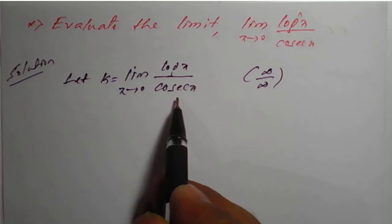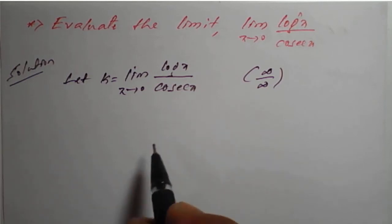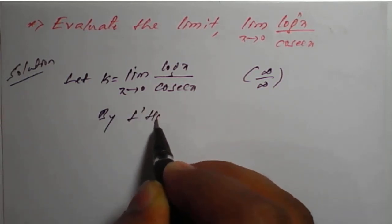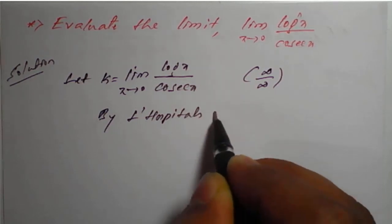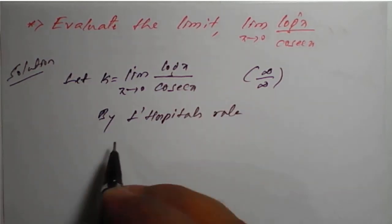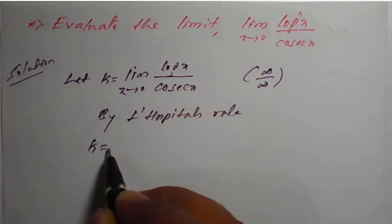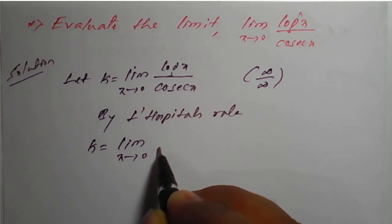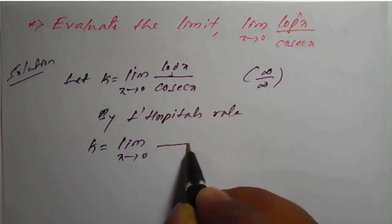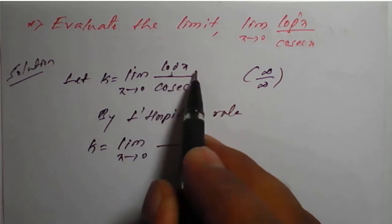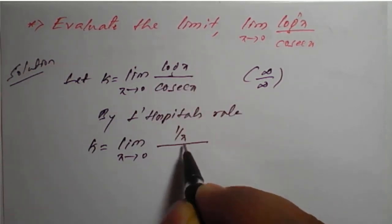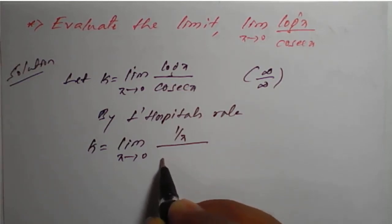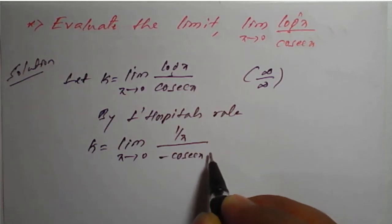For the infinity by infinity form, we can apply L'Hôpital's rule. Therefore, by L'Hôpital's rule, k is equal to the limit as x tends to 0 of the derivative of log x over the derivative of cosecant x. The differentiation of log x is 1 upon x, and the differentiation of cosecant x is minus cosecant x into cot x.